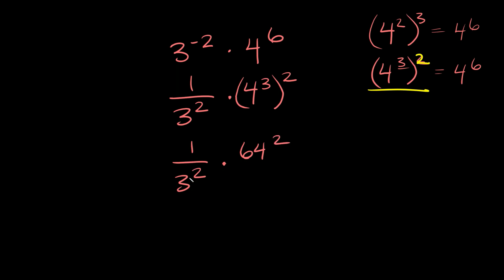So now all we're left with is 1 over 3 squared times 64 squared. To multiply these together, you just multiply straight across. So on top we have 1 times 64 squared, which is just equal to 64 squared. And then on the bottom, we don't have a denominator over here, so here we have a 3 squared, that's all we have. So we put a 3 squared right there.